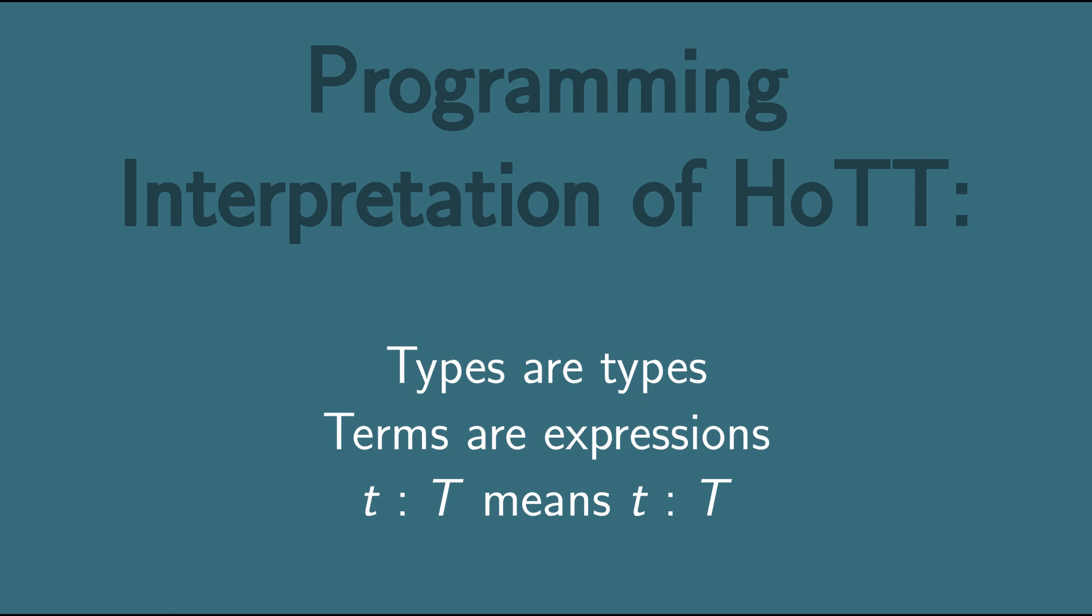We'll see more later how we can make sense of the computing part of this. For instance, the numeral 6 is a well-typed term of type int. The expression 3 plus 3 is also a well-typed term of type int. And there's an obvious relationship between these terms. 3 plus 3 is 6. Or more exactly, 3 plus 3 computes to 6. In the next video, we'll see how we can express that two terms are actually the same.